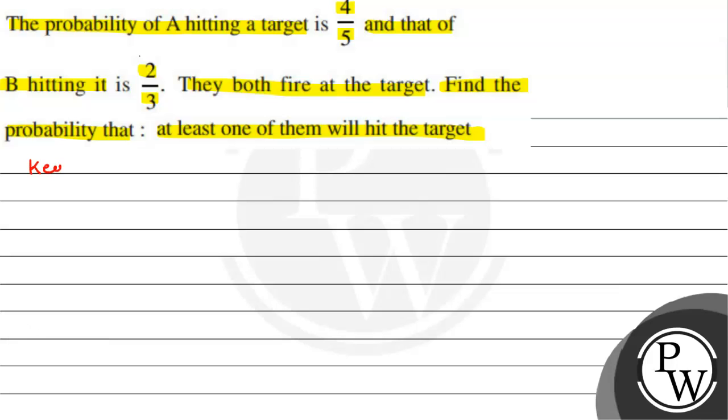Let's see the key concept that we are going to use here. The key concept is probability, which is favorable outcomes upon total outcomes.